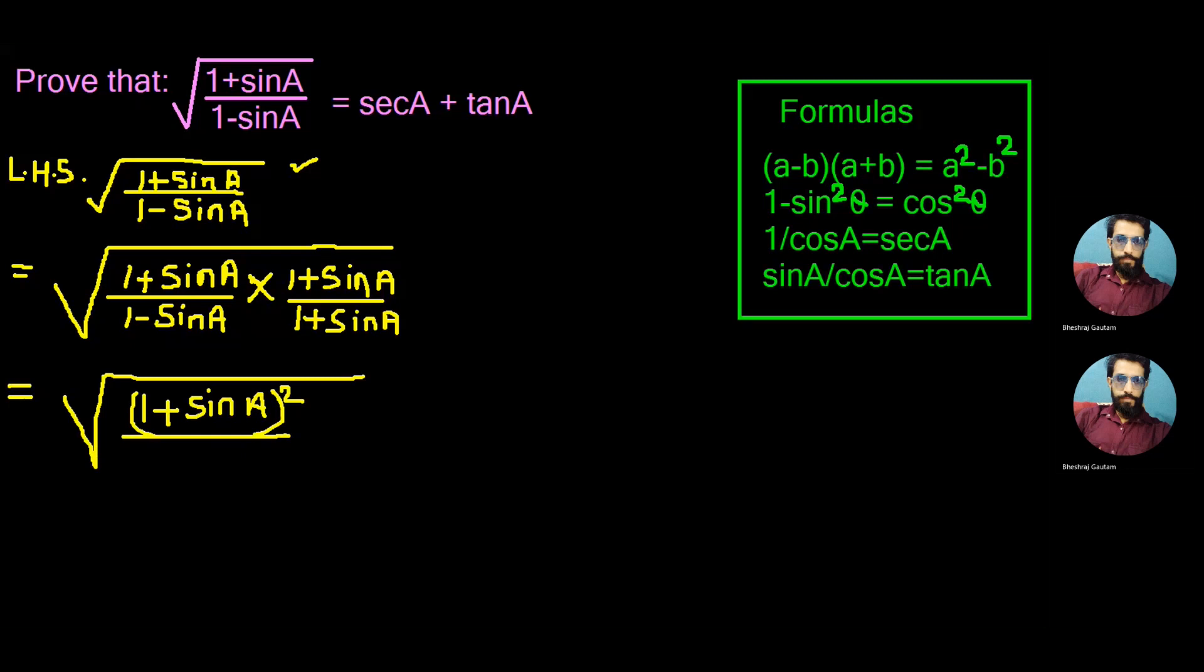One minus sin A in the first numerator and one plus sin A in the second one can be expressed in the formula form, that is A minus B, A plus B is equal to A square minus B square.